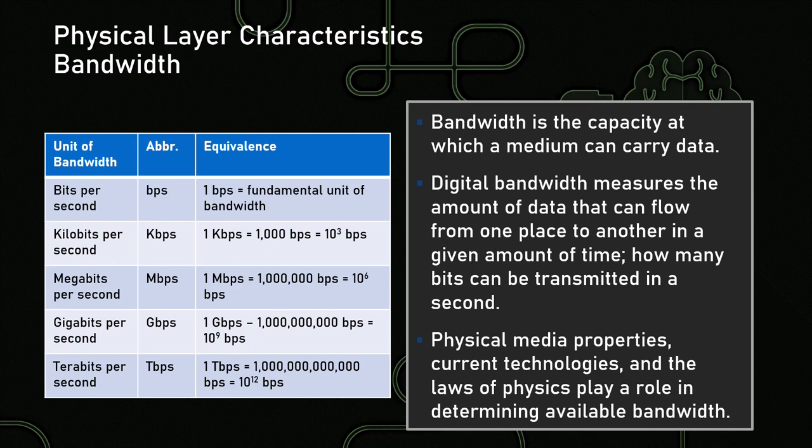Now we've got a big term to discuss: bandwidth. Bandwidth in a comfortable definition is the capacity at which a medium can carry data. More technically, it is the width between the top of the frequency band and the bottom of the frequency band — take the highest frequency that can be carried, subtract the lowest, and you have the width of the operational frequency of that particular band. The unit of bandwidth is the bit per second or BPS — one BPS is one single yes or no, one or zero, true or false, off or on value. We can signal so that we can send more of them in a single interval of time: a thousand bits per second is one kilobit per second.